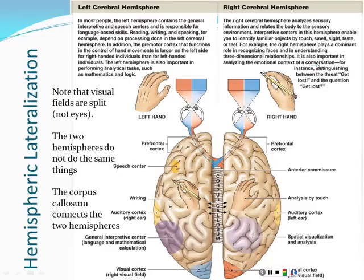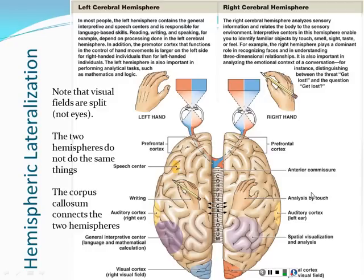The left and right sides of the brain are not the same — many functions are lateralized, meaning they take place on one side but not both. For example, Broca's area — the speech center — is only on the left side in most people. Writing is also on the left, but analyzing things by touch is on the right. A stroke on the left may leave someone unable to write even though they can recognize objects by touch.